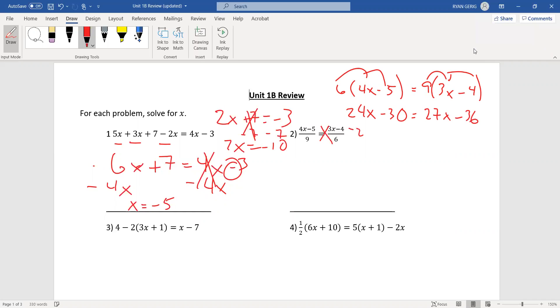I'm going to move the 24x to the other side to keep my x's positive. So, I have negative 30 equals 3x minus 36. I'm going to add 36. So, that gives me 6 equals 3x. Divide by 3, I get x equals 2.